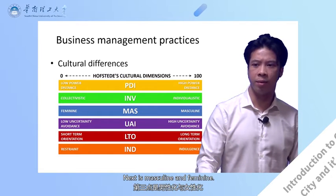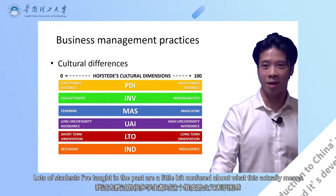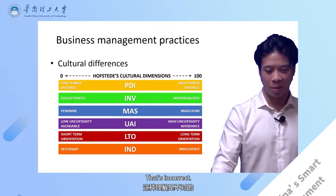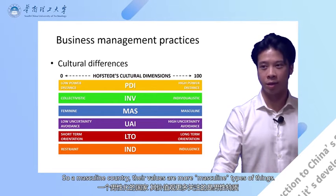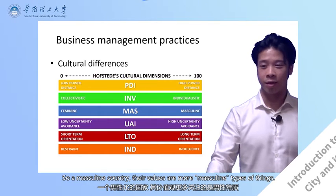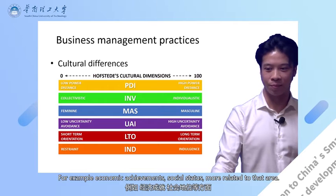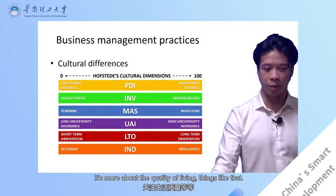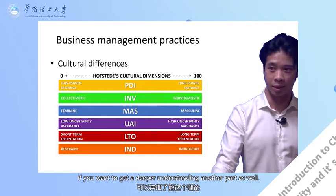Next is masculine and feminine. This one is a little bit tricky to understand. It does not mean one country is full of men and another is full of women. What it means is that the values of the country differ: a masculine country's values are more focused on masculine types of things, such as economic achievement and social status. Whereas the feminine side is more about collaboration and quality of living. You can also read about this in more detail for a deeper understanding.